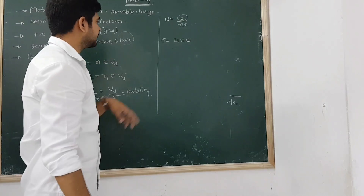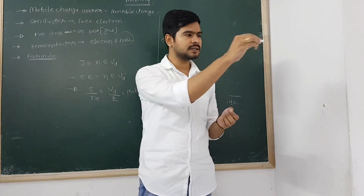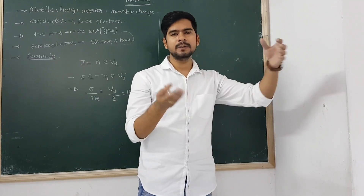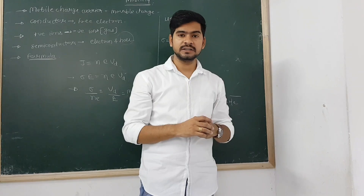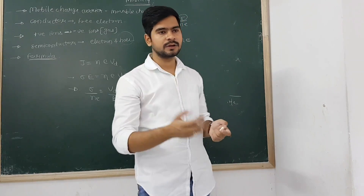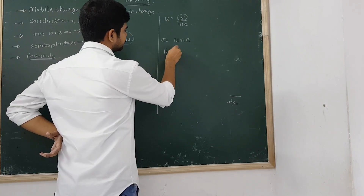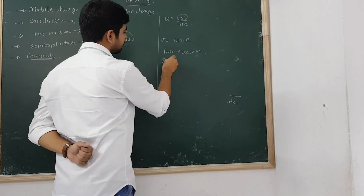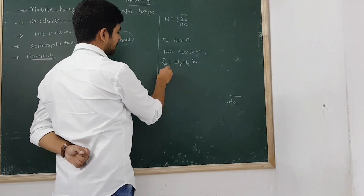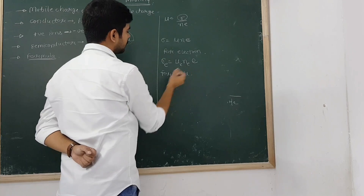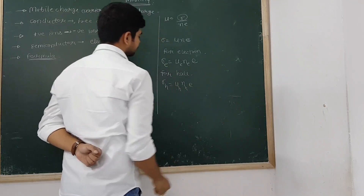The reason sigma is related to mobility is that if free electrons — mobile charge carriers — are running freely, it means it will be a very good conductor. That's why we talk about conductivity. If you have conductivity, you can easily find resistivity. For semiconductors, for electrons: σ_e = μ_e · n_e · e, and for holes: σ_h = μ_h · n_h · e.